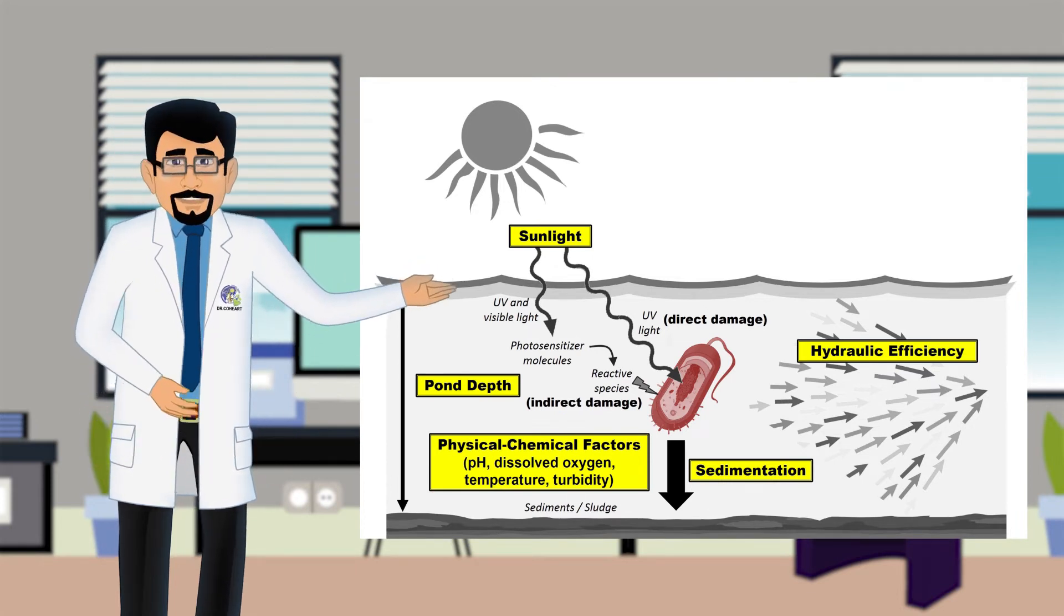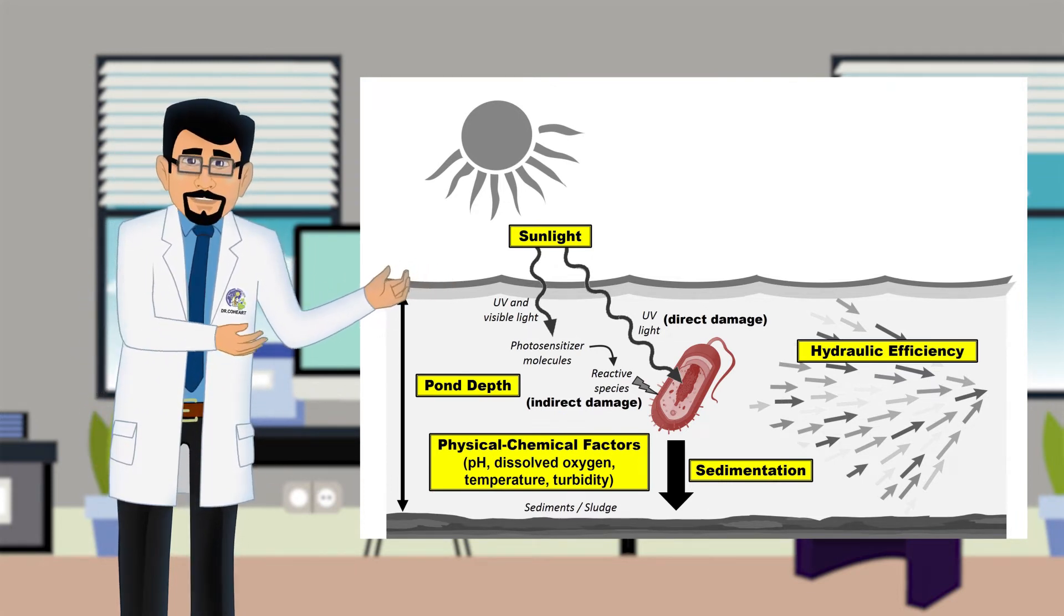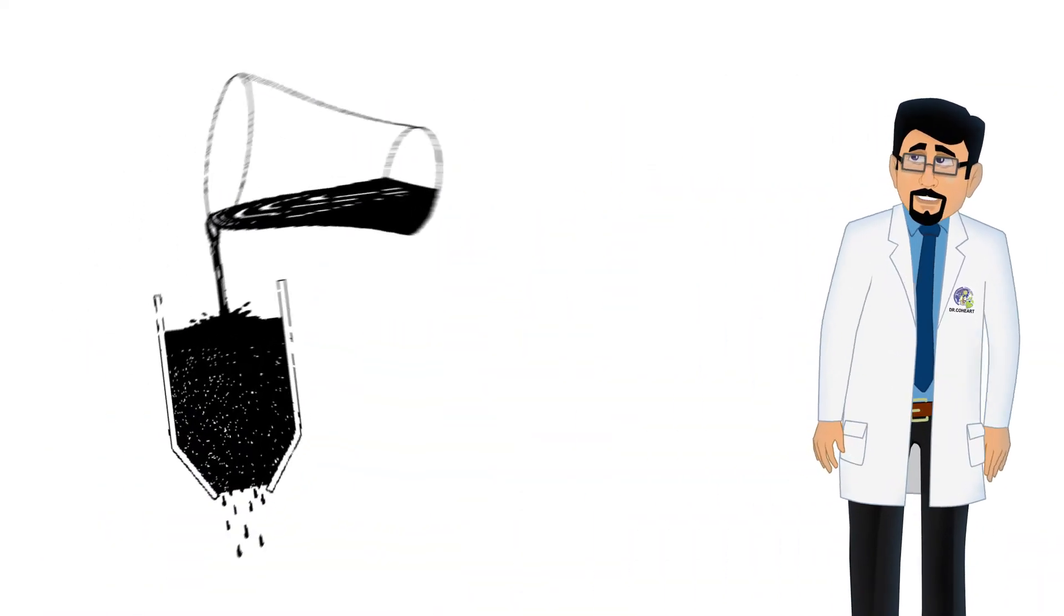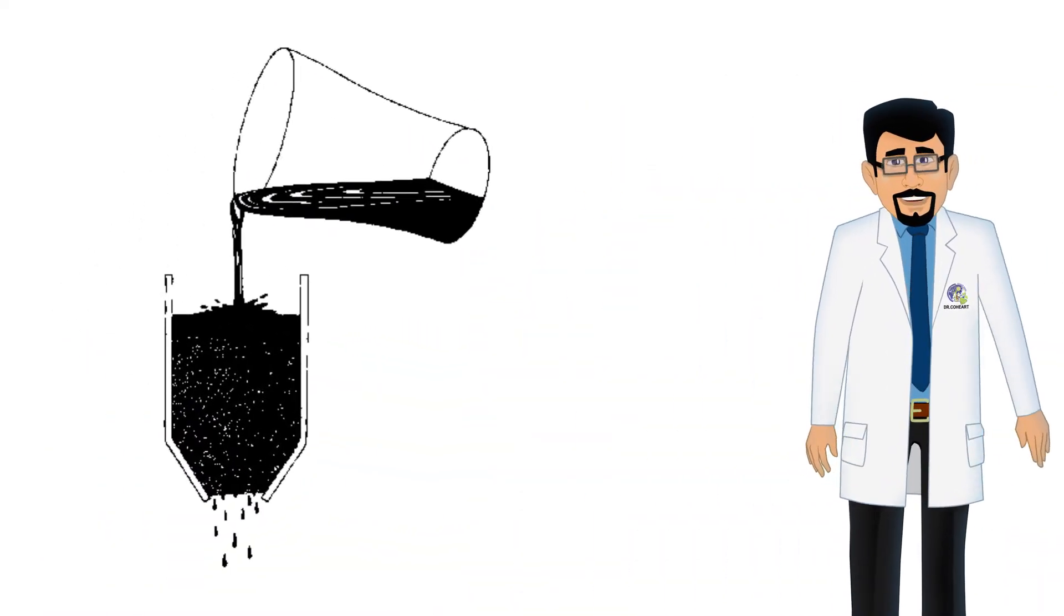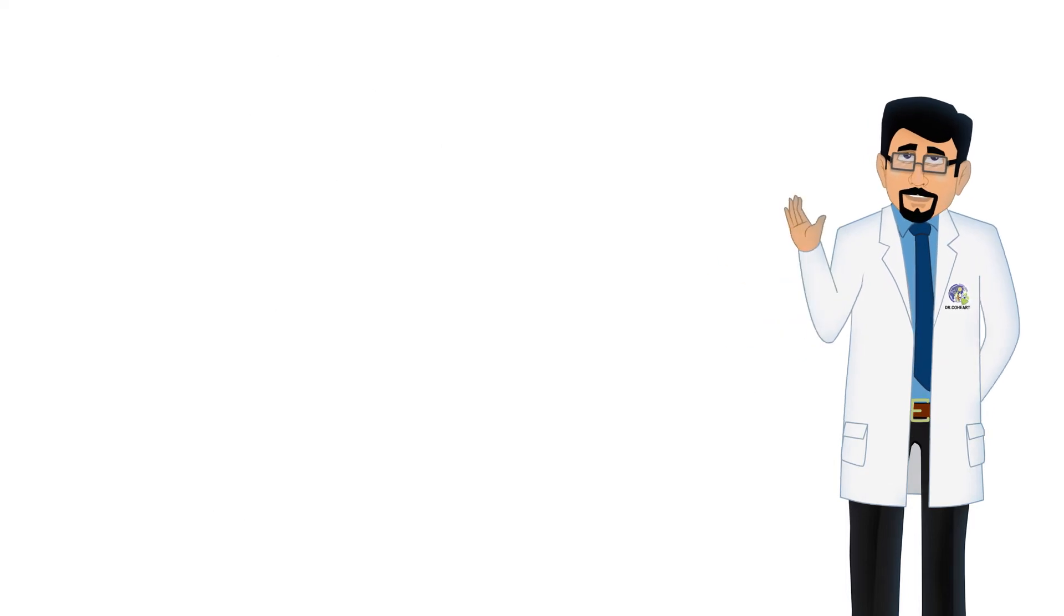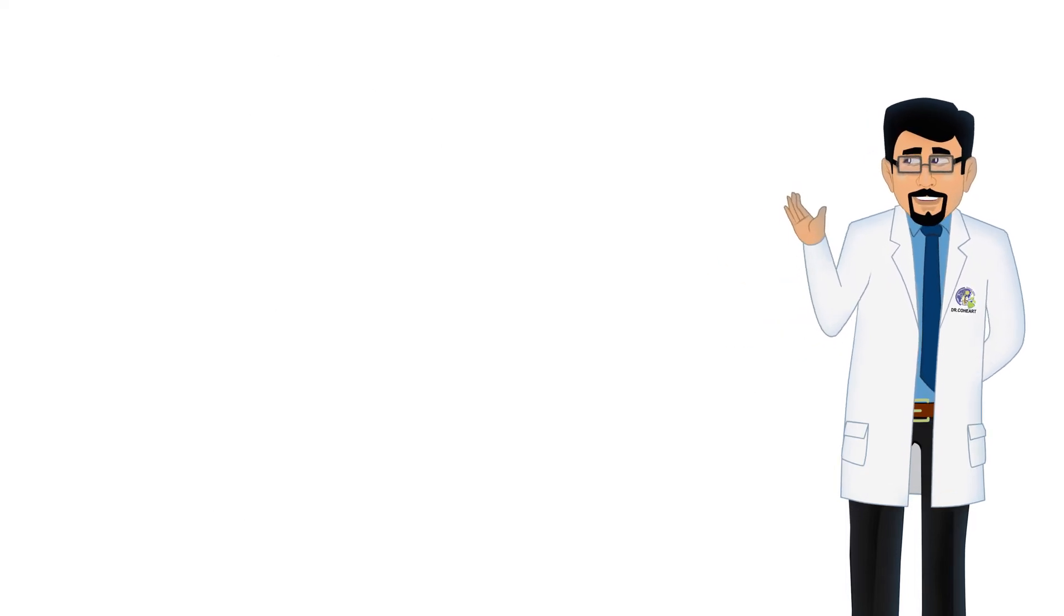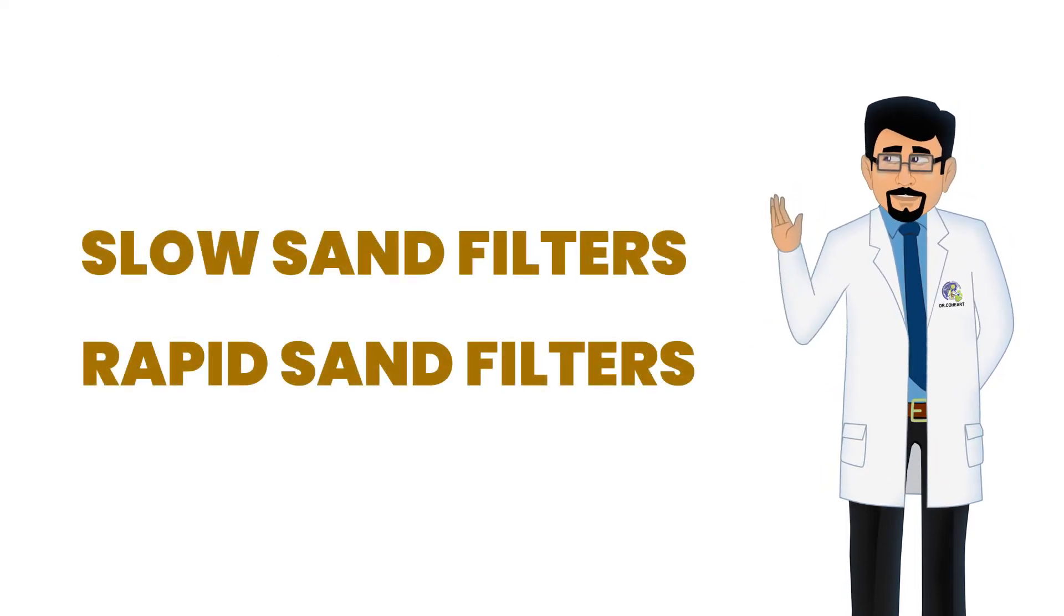Filtration is done by allowing the water to flow and percolate through sand. Two types of sand filters are recognized: slow sand filters and rapid sand filters.